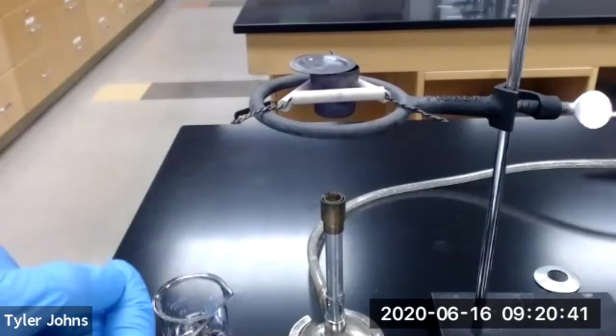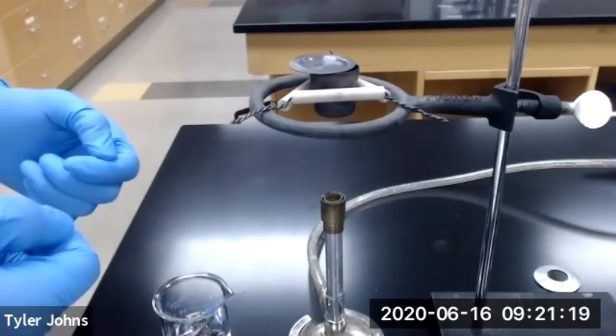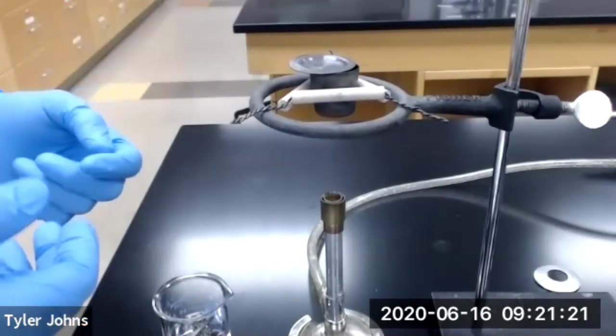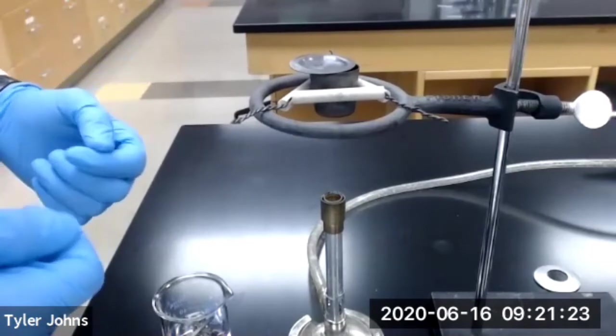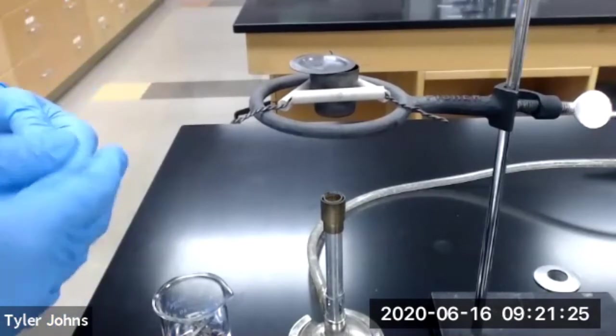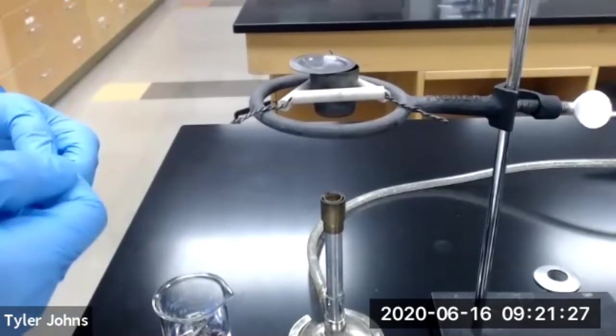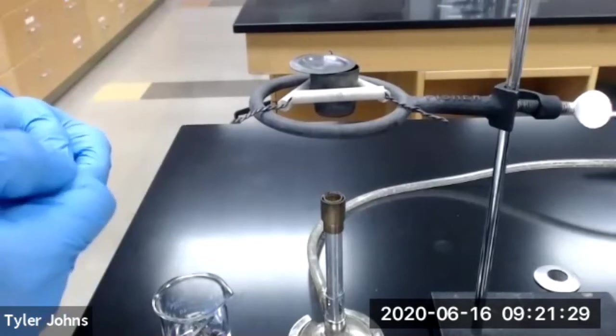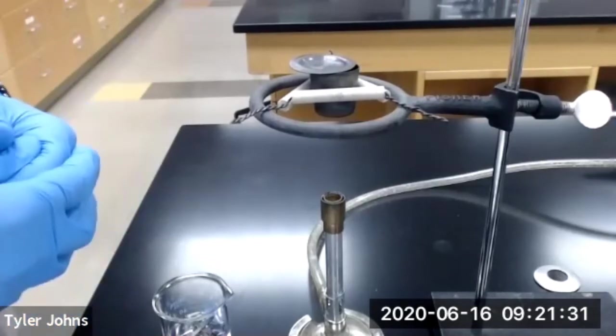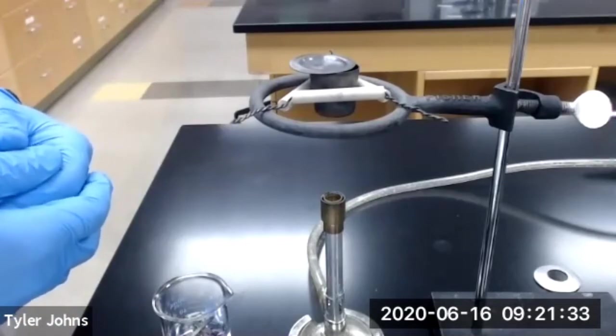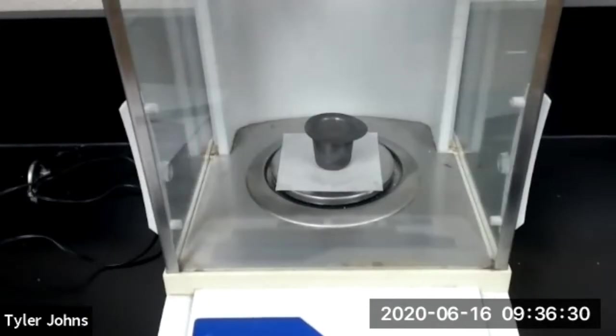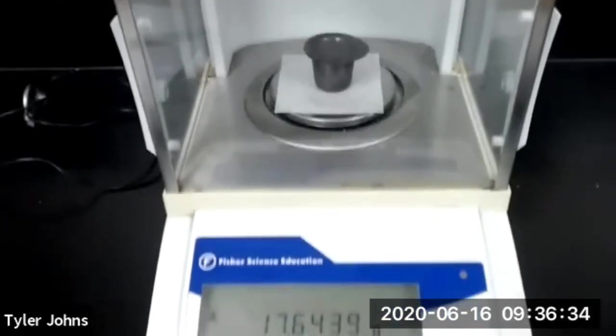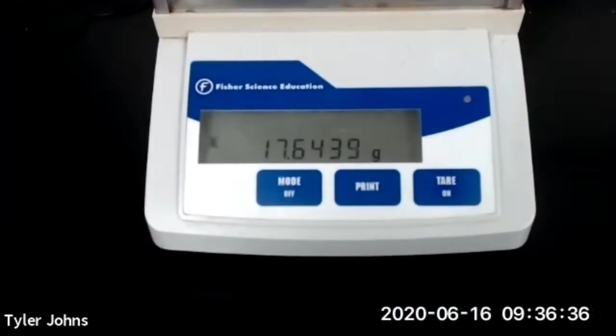And then we are going to weigh our crucible and cover. We're going to repeat this heating, cooling, and massing process until the mass is constant or within 0.0005 grams. So the constant mass of our crucible and crucible cover is 17.6439 grams.